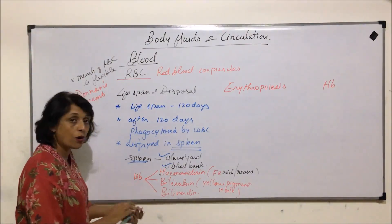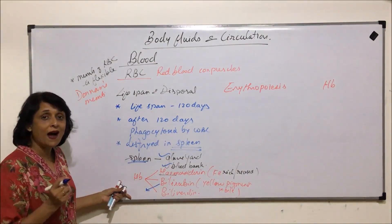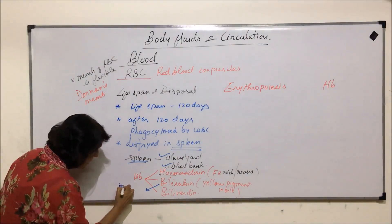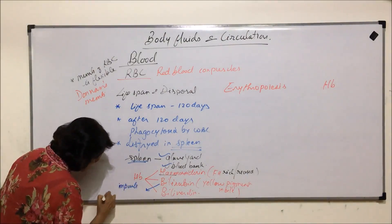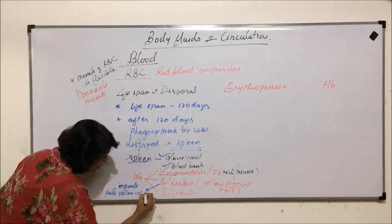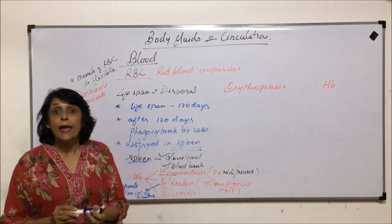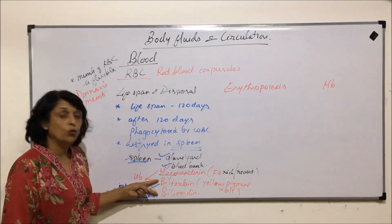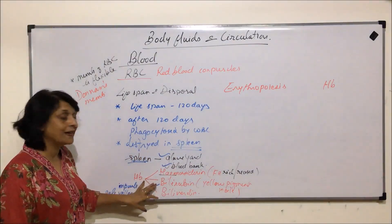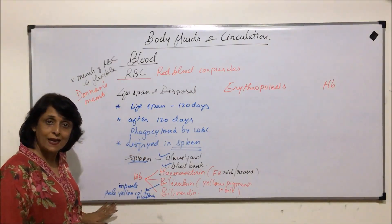Bilirubin is the yellow pigment which imparts the pale yellow color to plasma. It imparts a pale yellow color to plasma, and these two pigments get excreted out. If they remain in the body, they get deposited under the skin, and that condition is known as jaundice. So this is about the lifespan and disposal.